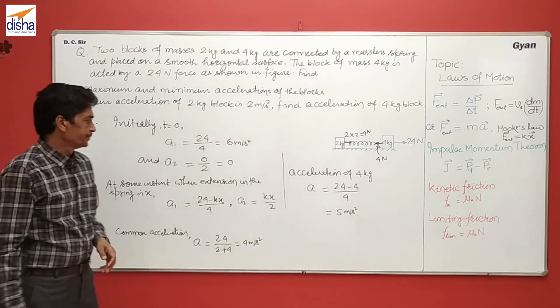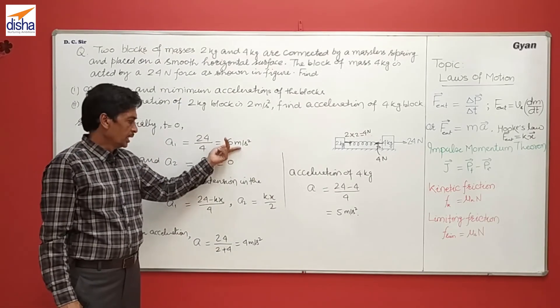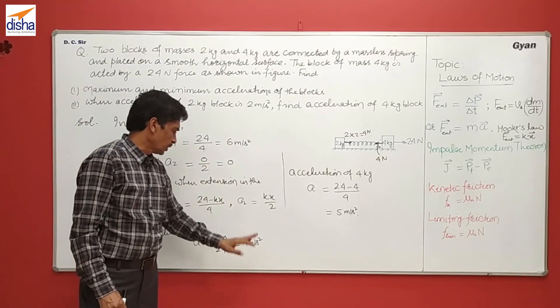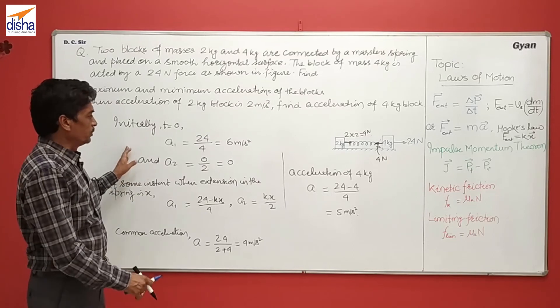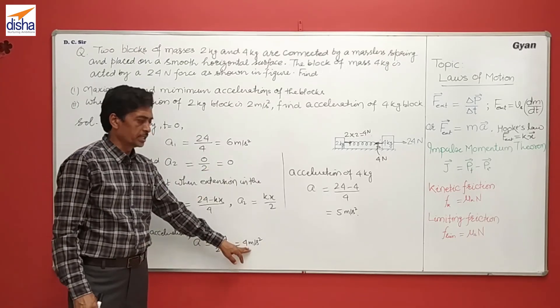So here the maximum acceleration of 4 kg block is 6 meter per second squared, and its minimum acceleration will be 4 meter per second squared. And that of 2 kg block, the minimum acceleration is 0 and its maximum acceleration will be 4 meter per second squared.